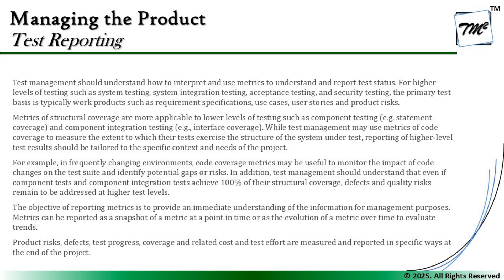The objective of reporting metrics is to provide an immediate understanding of information for management purposes. Matrices can be reported as a snapshot of a metric at a point in time, or as the evolution of a metric over time to evaluate trends. For example, when following agile methodology, for a particular sprint you will have the data for that sprint, but you will also reflect a trend over the last three sprints showing how you have been progressing — what we call cumulative data presented to leadership.